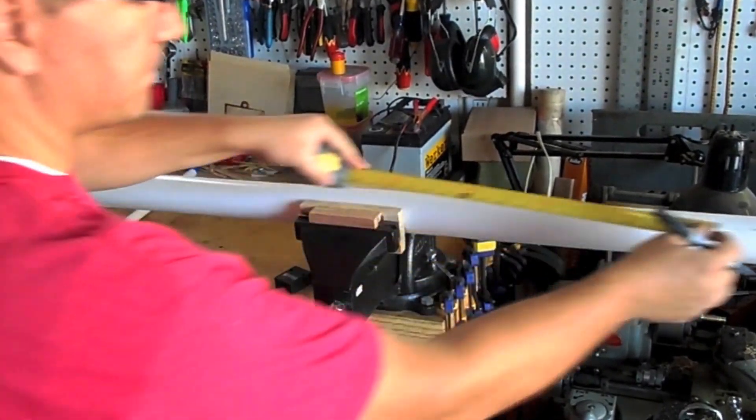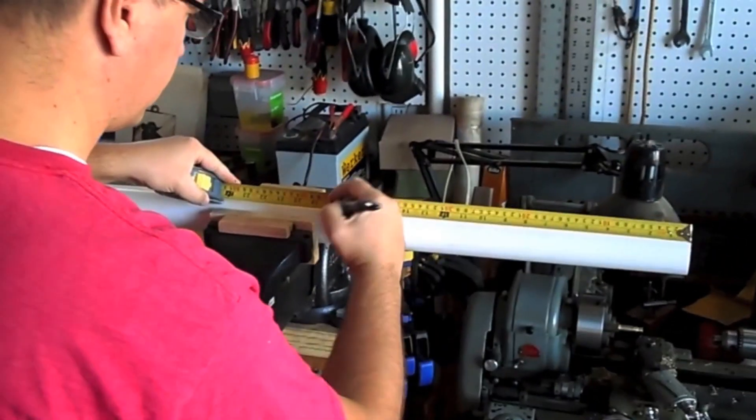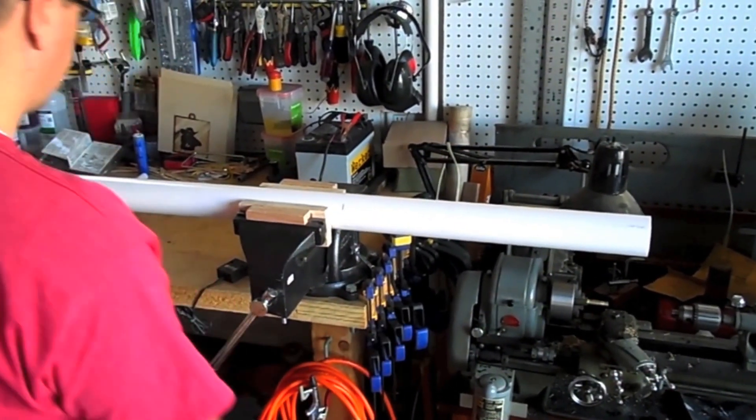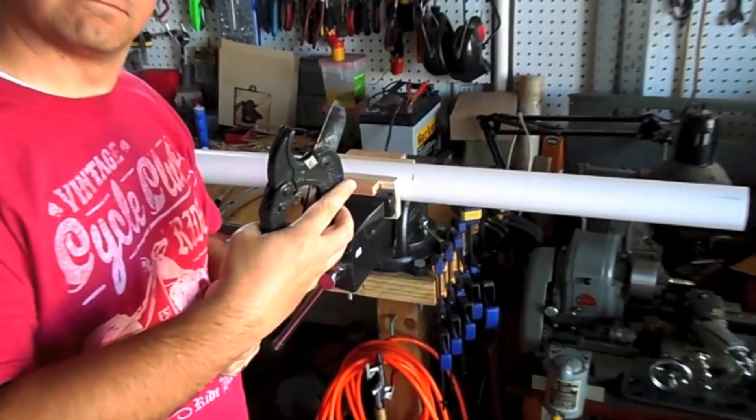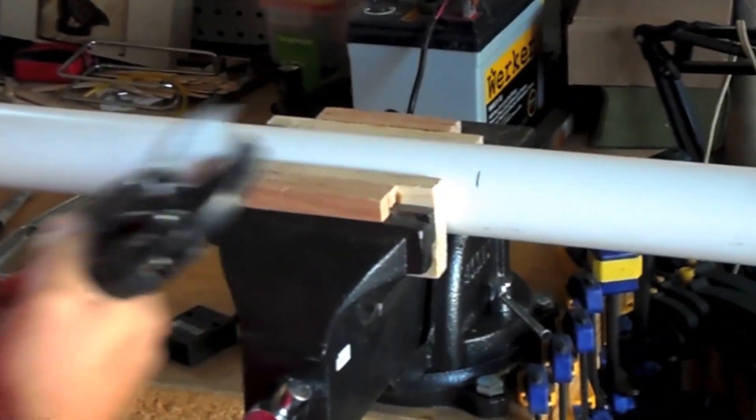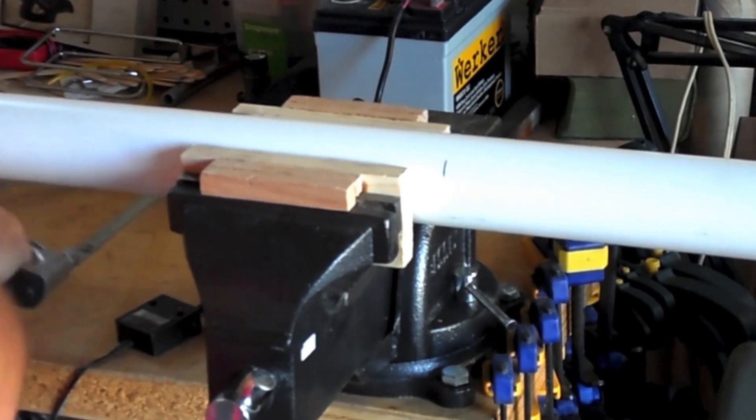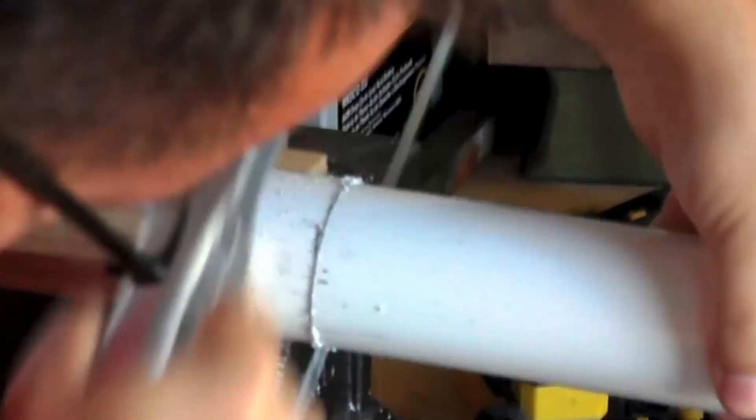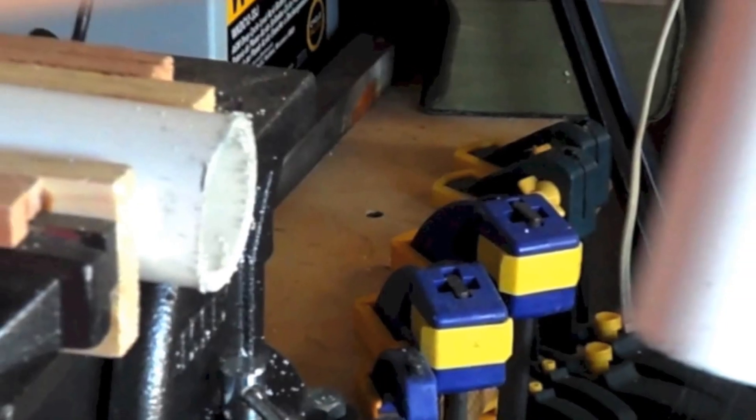To start with I measured 18 inches of 2 inch PVC pipe and I need to cut two of these. My PVC cutter wasn't big enough so I thought I'd try using my hacksaw. Fortunately I'm really quick with a hacksaw but even so it left a rough edge.